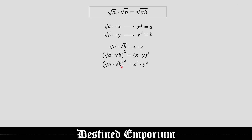Once you've reached this point, go back to your definitions and substitute: x squared is equal to a and y squared is equal to b, inside this bracket. So you have (x times y) squared equal to x squared times y squared. We substitute on the right-hand side, replacing x squared with a and y squared with b, giving us (x times y) squared equals a times b.